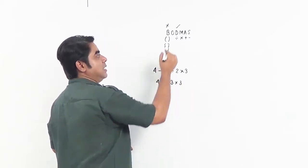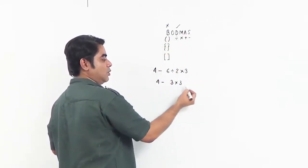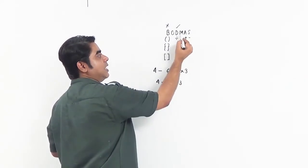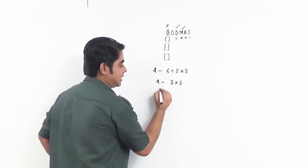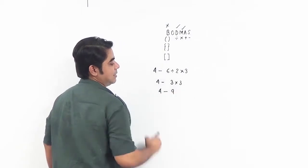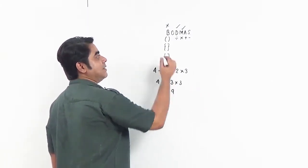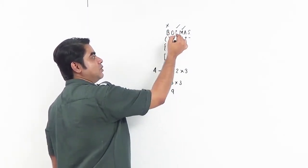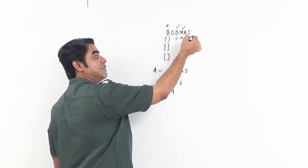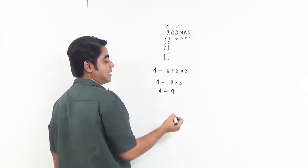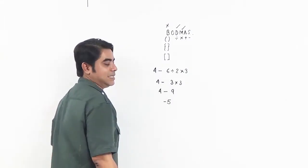Next we scan it again. Do we have a bracket? No. Do we have a division? No, division is done. Do we have a multiplication? Yes, we have a multiplication. Do the multiplication first. 4 minus 9. Next, scan it again: we don't have a bracket, we don't have division, we don't have multiplication, we don't have addition, but we do have a subtraction — and this becomes minus 5.